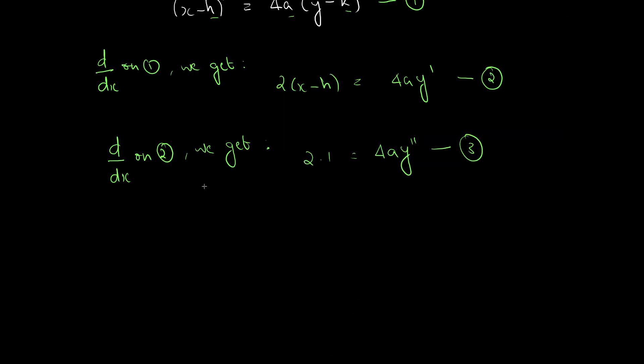We need to differentiate once more d by dx. On 3, we get, this becomes 0. This becomes 4a y triple dash.